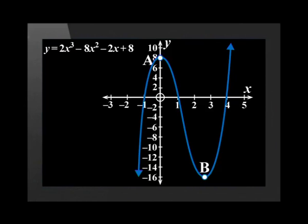Here is y equals 2x cubed minus 8x squared minus 2x plus 8. The turning points, also known as the stationary points A and B, have been marked.